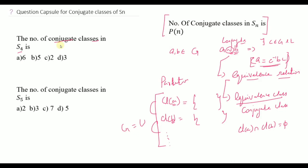The number of conjugate classes in the symmetric group Sₙ is equal to P(N), where P(N) means the number of partitions of N.